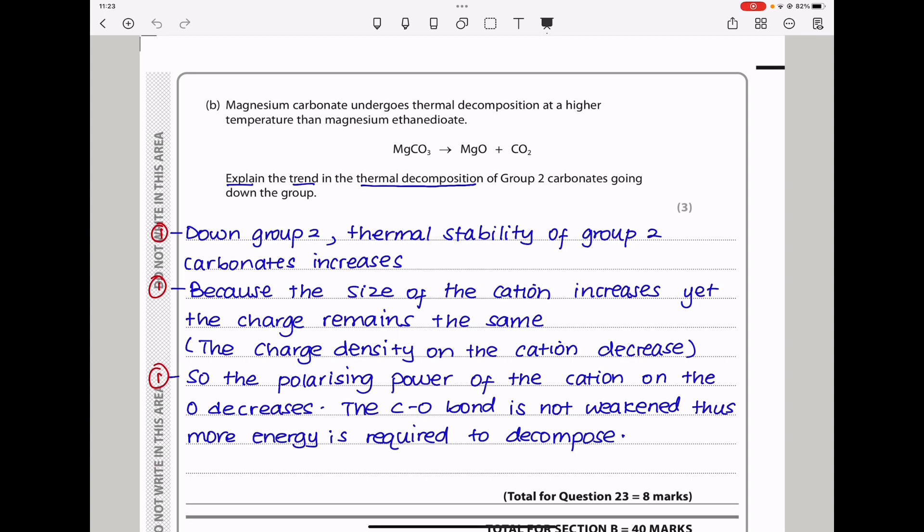Next they say, magnesium carbonate undergoes thermal decomposition at a high temperature than magnesium ethane-di-oate. So the decomposition is that. Explain the trend in thermal decomposition of group 2 carbonates going down the group. As we go down group 2, the charge on the cations remains the same, but the sizes of the cations increase.